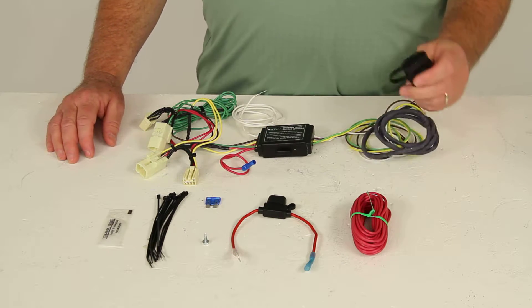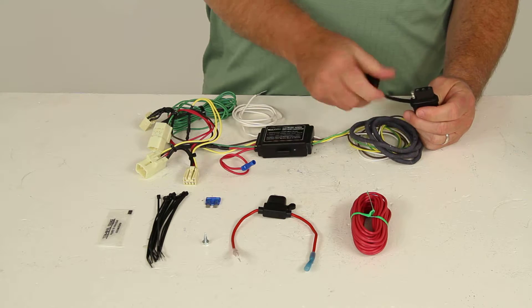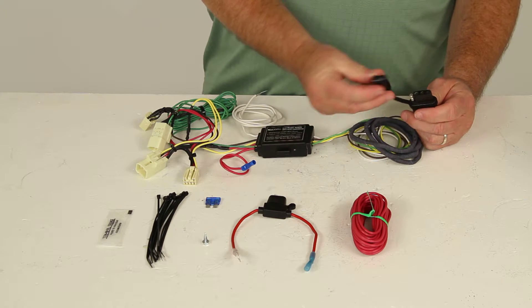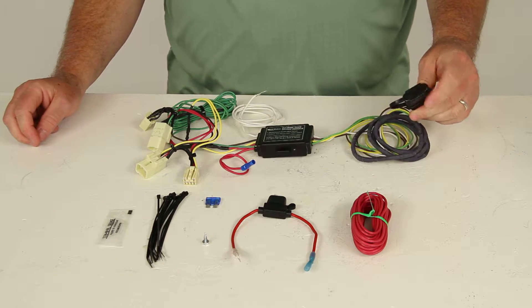Now the four pole trailer connector does use corrosion resistant terminals, and also has a nice dust cover that when it's not being used you can put on over the terminals to help protect it from any damage or elements.